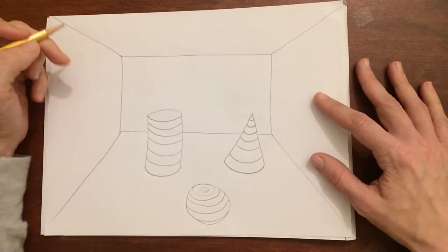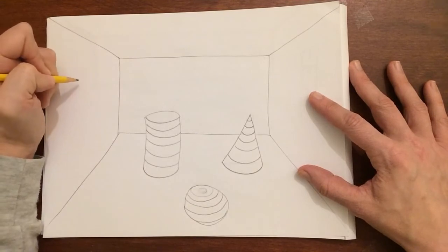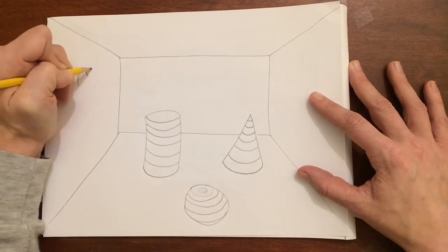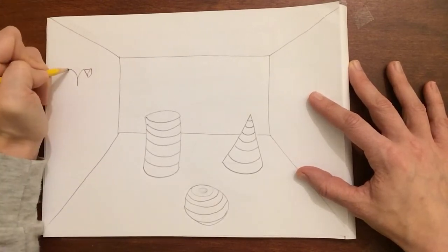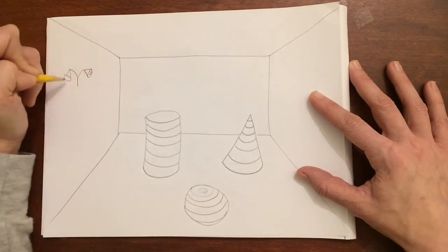Now maybe I have a lamp over here or a little light of some kind. Let's see. I'll have a little light. I can draw a couple more cone shapes here. Maybe there's a little light bulbs inside.